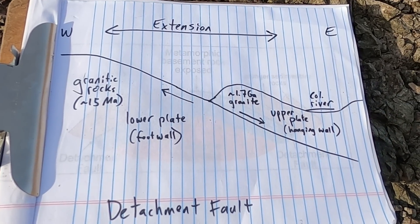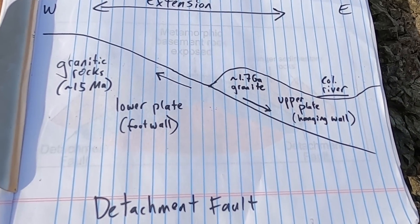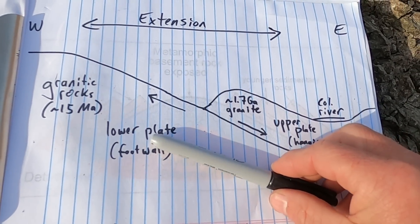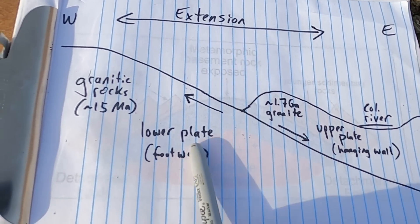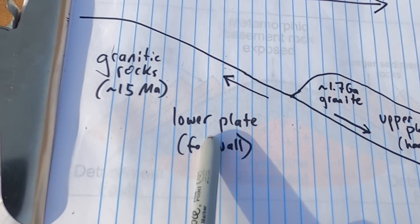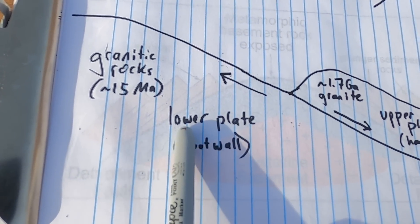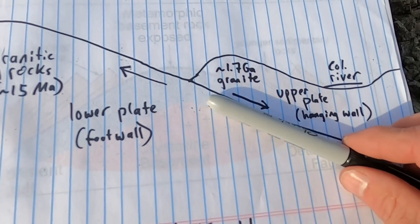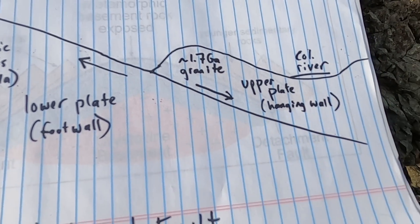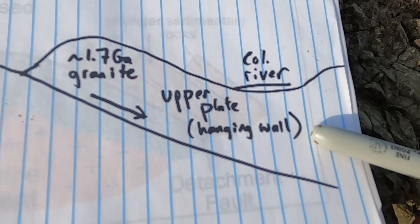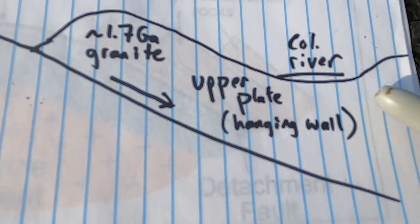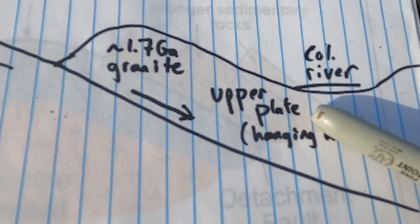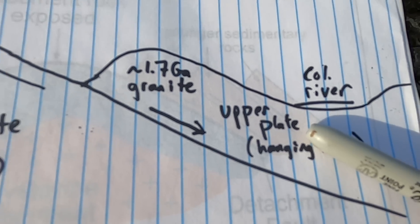At this specific detachment fault, the area below the fault is known as the foot wall, but with detachment faults it's often called the lower plate. The side of the fault above it, classically known as the hanging wall, is sometimes referred to as the upper plate.